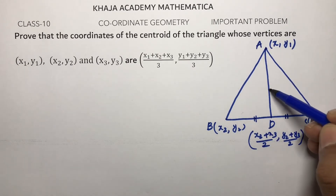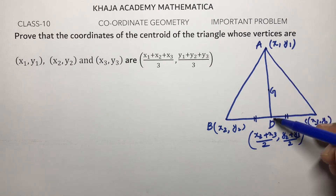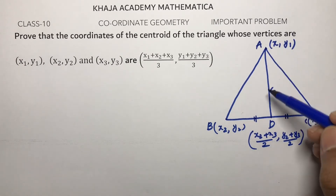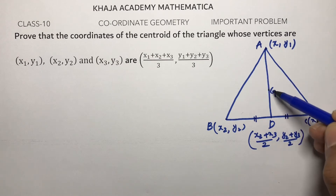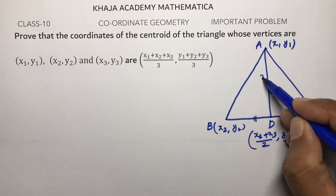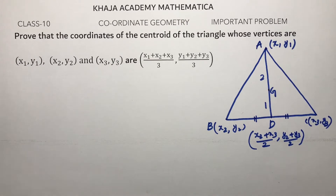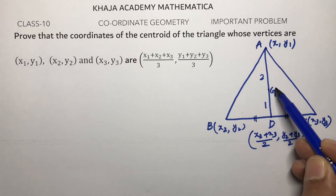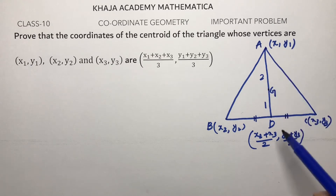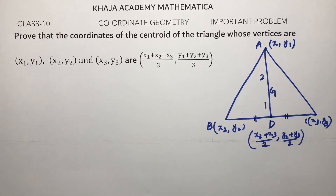The centroid divides the median in the ratio 2 is to 1. So to find G, we note that G divides AD in the ratio 2 is to 1.